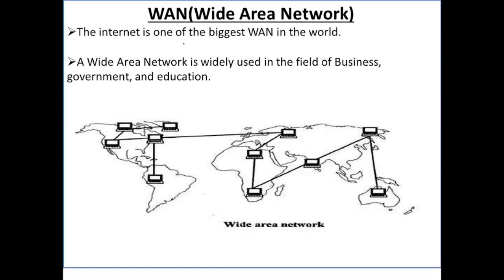The internet is one of the biggest WANs in the world and is the main example of a Wide Area Network — a network that has been created across the whole world. Wide Area Network is widely used in the fields of business, government, and education.